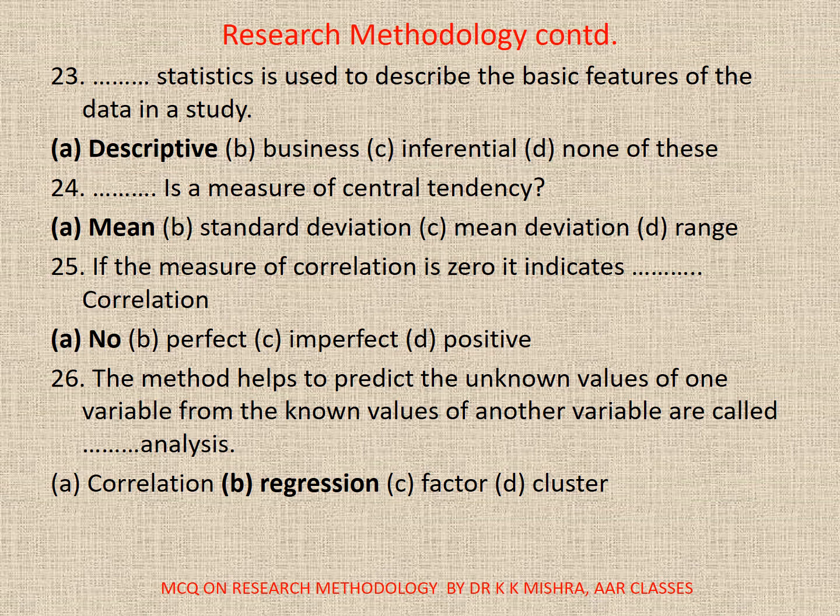Question 25: If the measure of correlation is 0, it indicates dash correlation. A. No. B. Perfect. C. Imperfect. D. Positive. Correct option is A. No correlation.